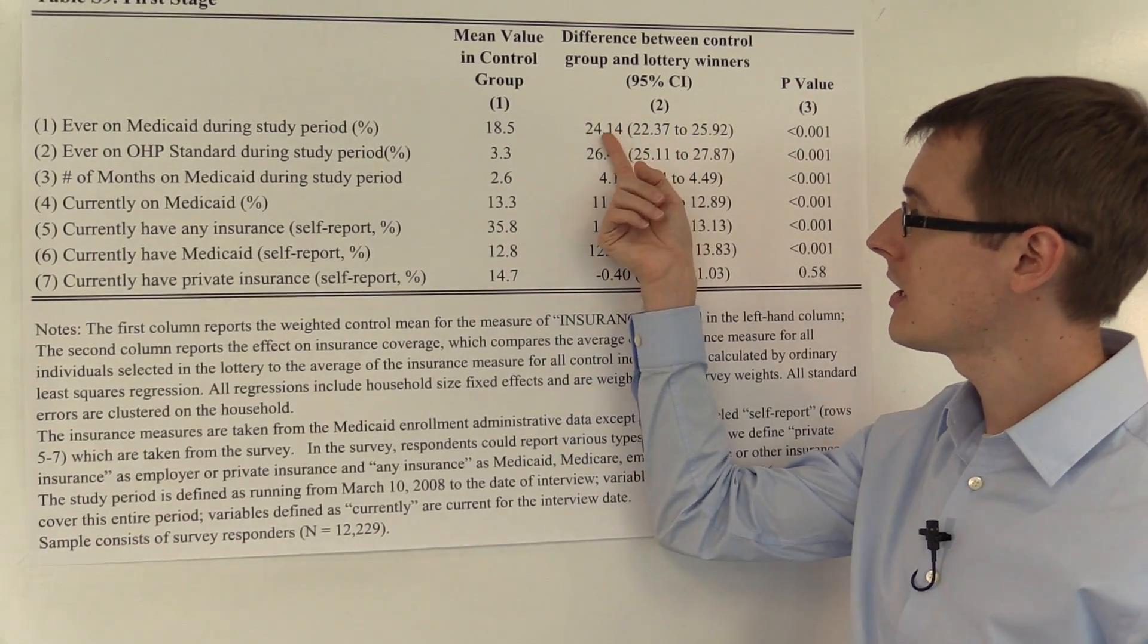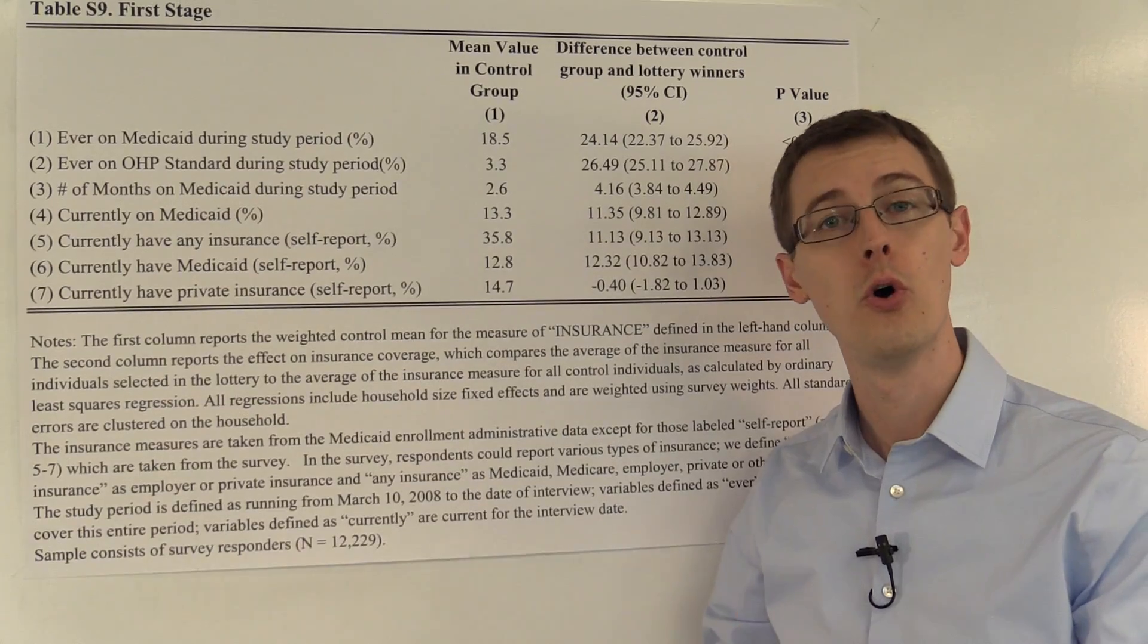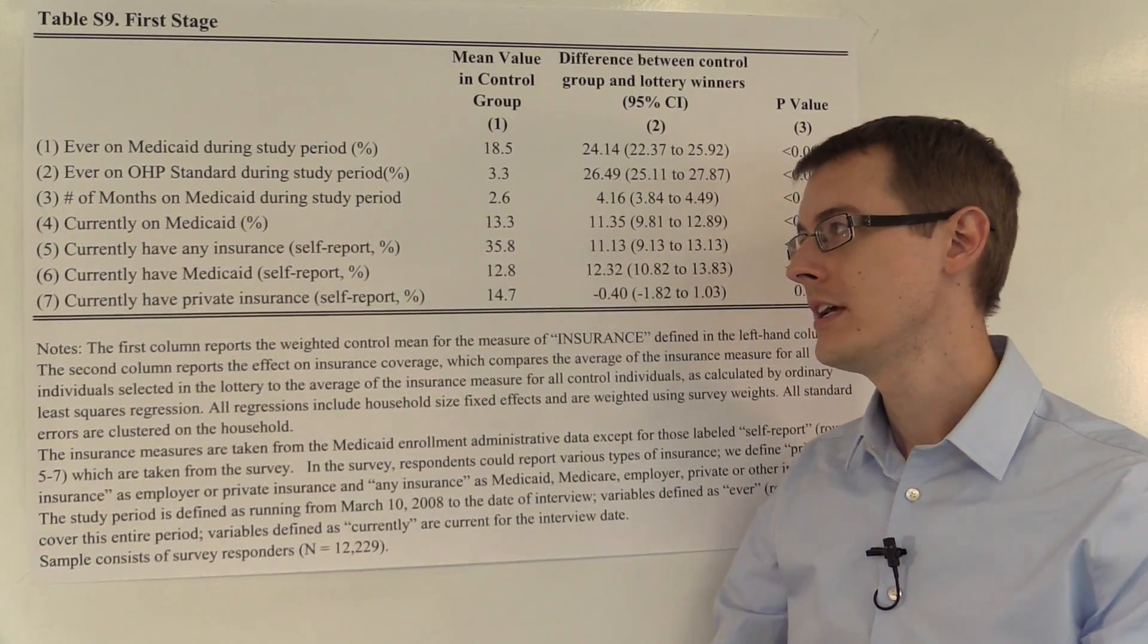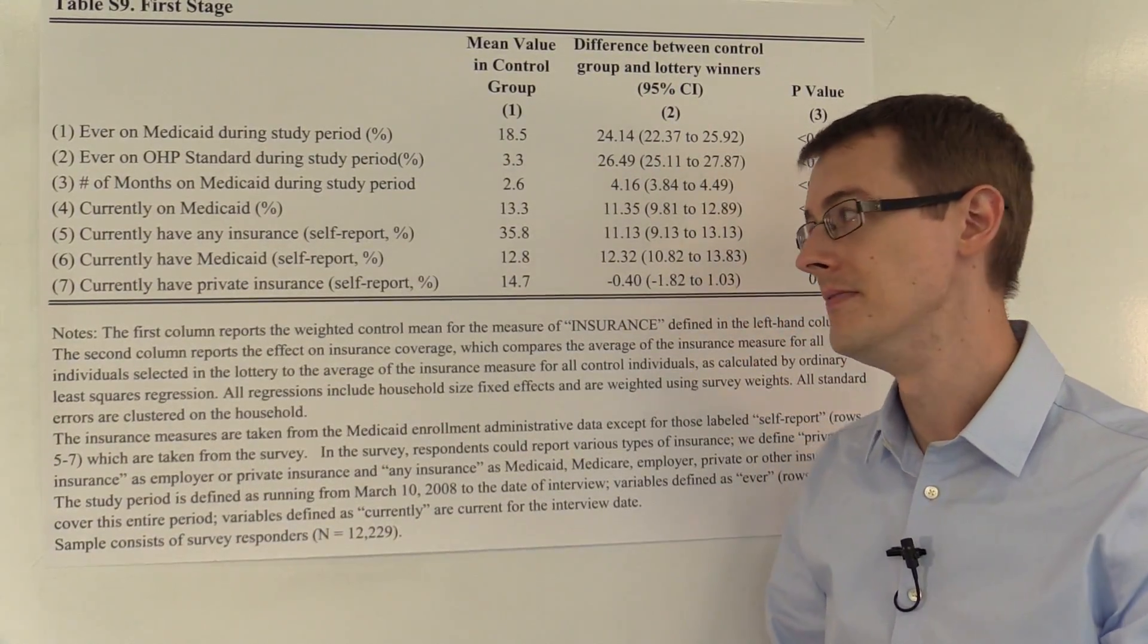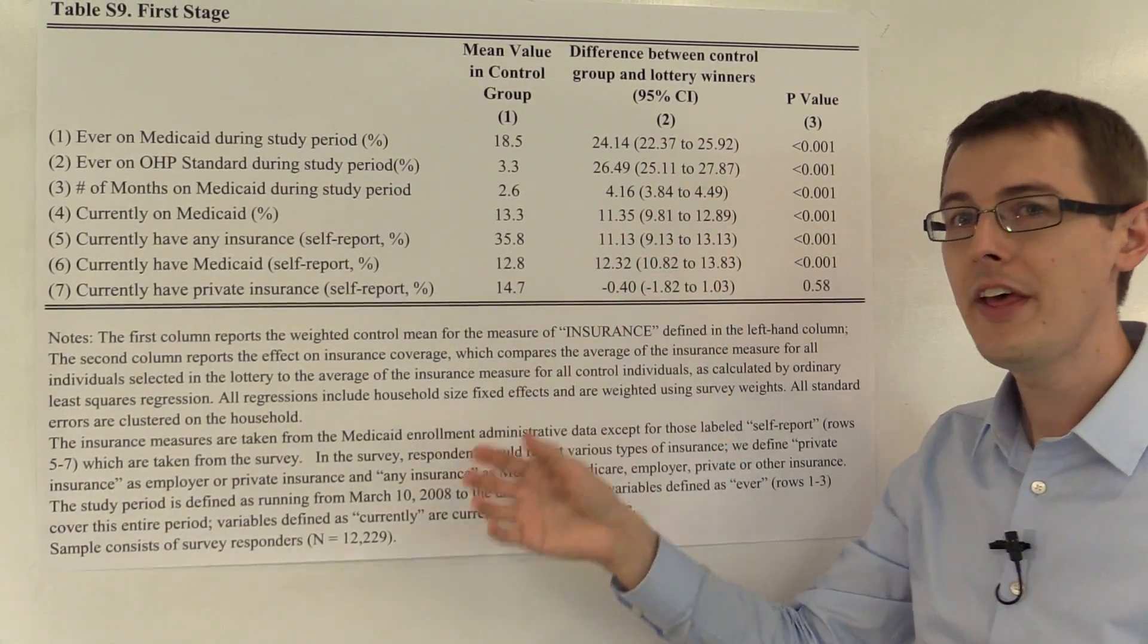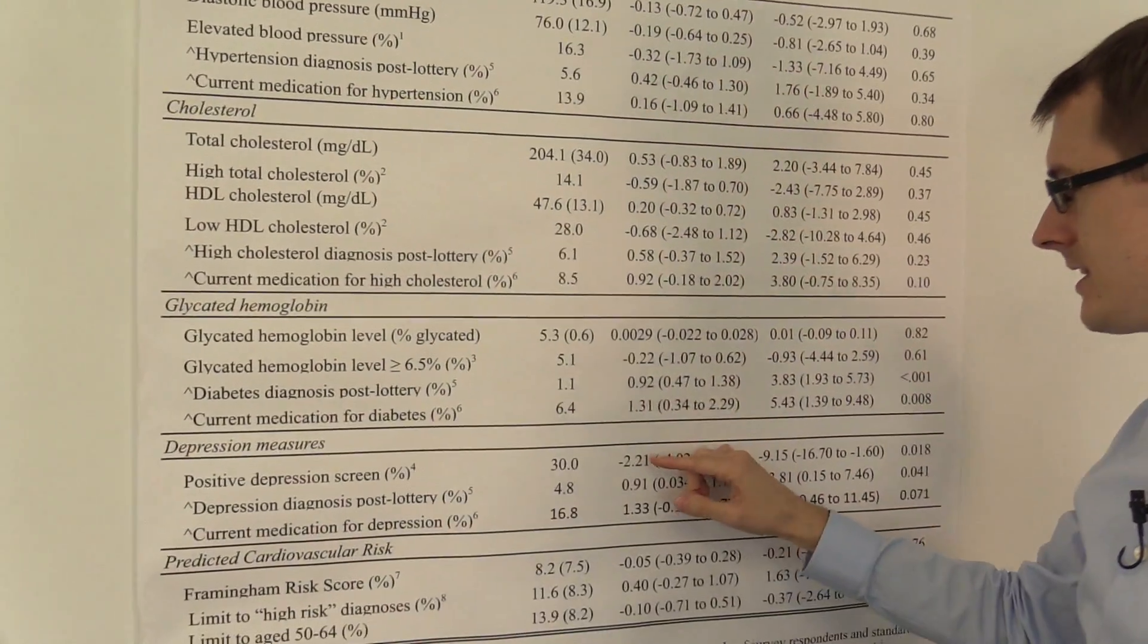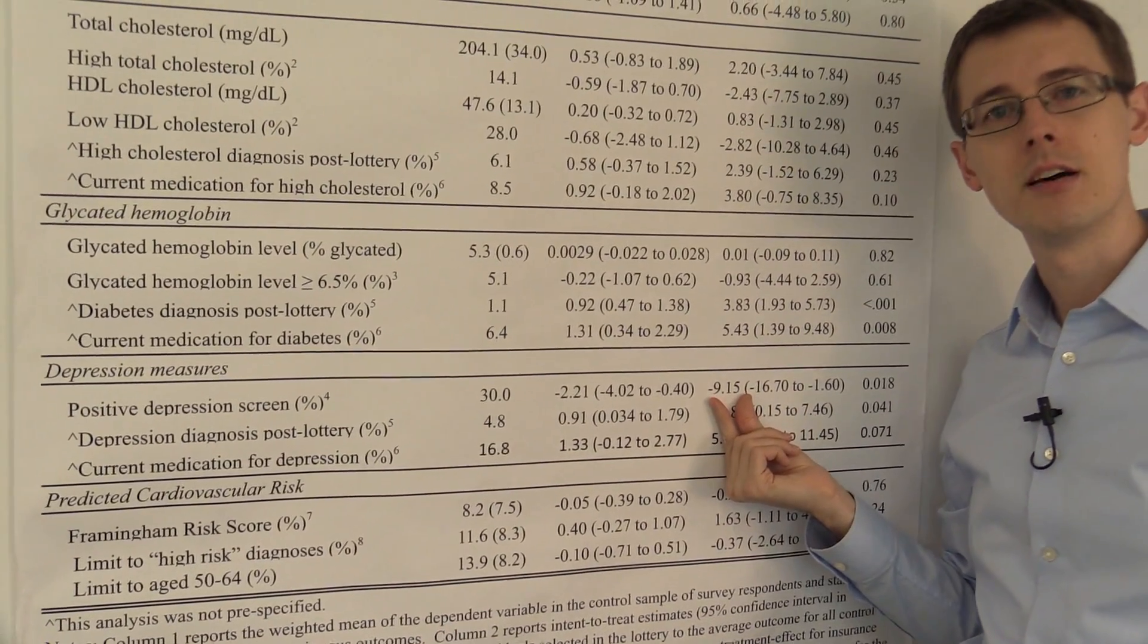This number here shows us that the relevance assumption in the instrumental variables analysis holds. The instrument actually did cause people to get treated, to actually receive Medicaid. So the indirect inference estimator is going to take this number here, or similar numbers,